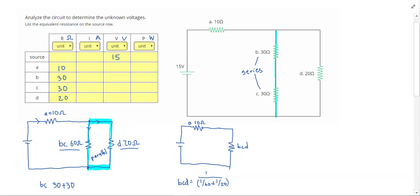Going ahead and plugging that in, I get a resistance of 15 ohms. So BCD is 15 ohms. I feel good about that answer because it should be smaller than either resistor that I combined together in parallel.